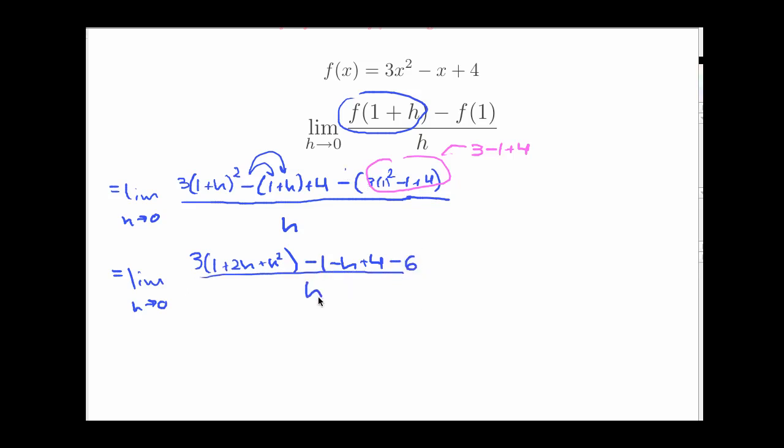This is all over h. One more algebra step and then we'll begin to crunch this down a little bit. Limit as h goes to 0 of, I'm just going to multiply this 3 through each of the terms I see here: 3 + 6h + 3h² - 1 - h + 4 - 6. I know I have some things that I can combine here like the numbers but I'm not going to do all that stuff at once.